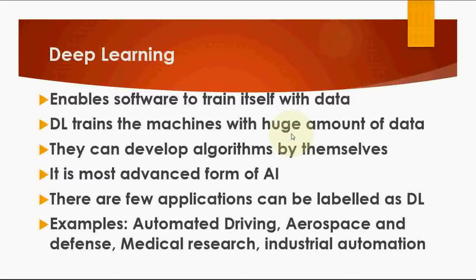Examples of Deep Learning applications: Automated Driving — the car drives automatically by predicting data based on how you drive and given specifications. Aerospace and Defense — Deep Learning is used there, to be covered in the next video in detail. Medical Research and Industrial Automation — many industries are purchasing robots that perform tasks previously done by humans. Even some software companies now use robots for coding applications.